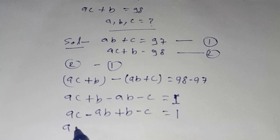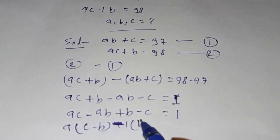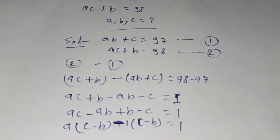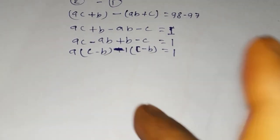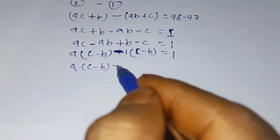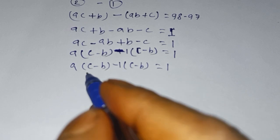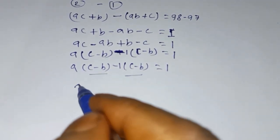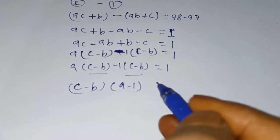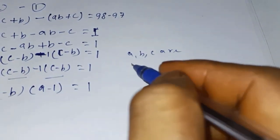Rearranging: ac minus ab plus b minus c = 1. Factor out a from the first two terms: a(c minus b) minus (c minus b) = 1. So (c minus b)(a minus 1) = 1. Here a, b, c are integers.